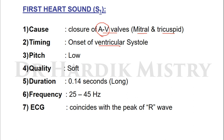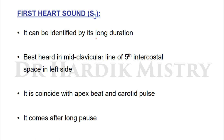Characteristics of S1: timing is at the onset of ventricular systole; pitch is low; quality is soft; duration is 0.14 seconds — it is a long sound; frequency is 25 to 45 Hz. On ECG it coincides with the peak of the R wave. It can be identified by its long duration. It is best heard in the mid-clavicular line of the fifth intercostal space on the left side. It coincides with the apex beat and carotid pulse, and it comes after a long pause.